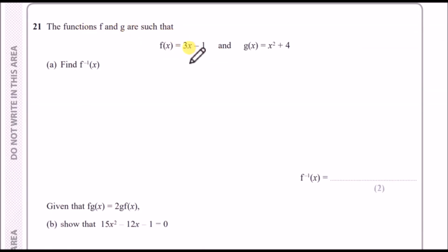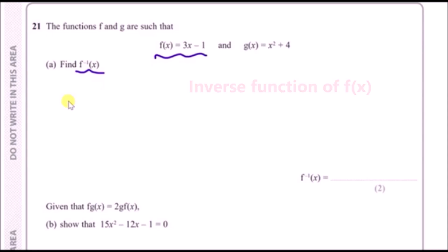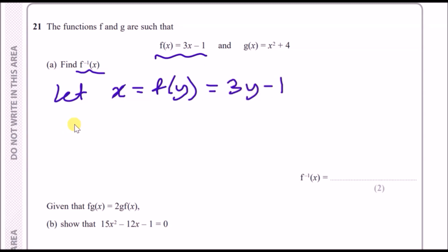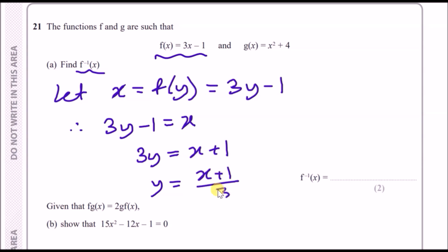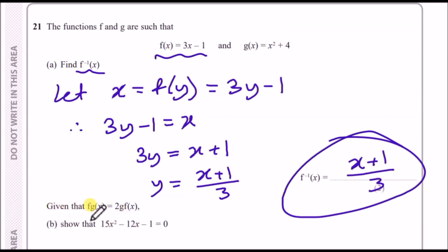Number twenty-one: find the inverse function f⁻¹(x) where f(x) = 3x − 1. Let x = f(y), so 3y − 1 = x. Adding 1: 3y = x + 1. Dividing by 3: y = (x + 1)/3. So f⁻¹(x) = (x + 1)/3.